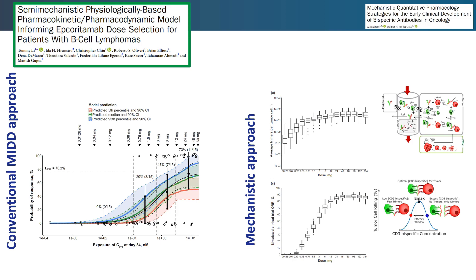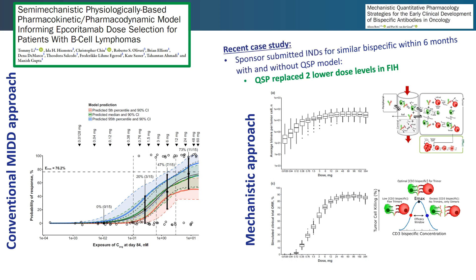At Satara, we have used a similar approach to support more than 20 bi- and multi-specific programs for a variety of pharma and biotech companies, increasingly as integral parts of IND submissions. In a recent case study, following successful submission of an IND supported by our QSP model, our client fed back to us that six months earlier they had submitted a similar IND without a QSP model, and that due to the QSP model they could start two dose levels higher in the first-in-human study.